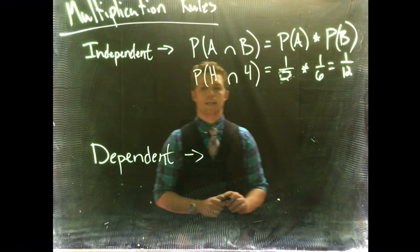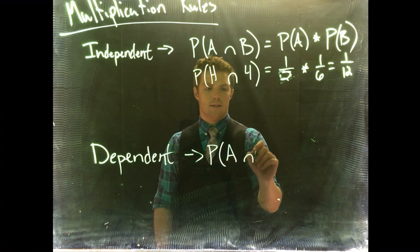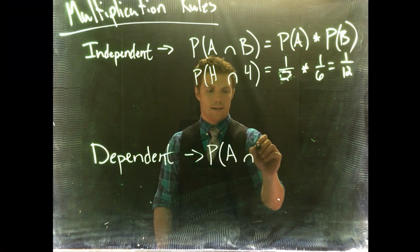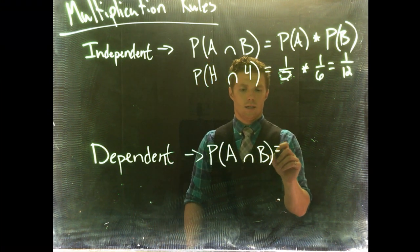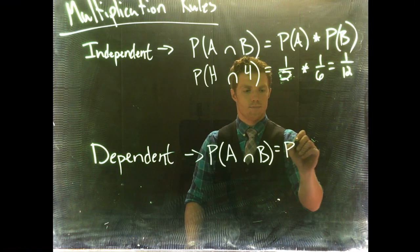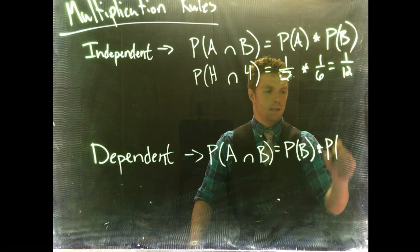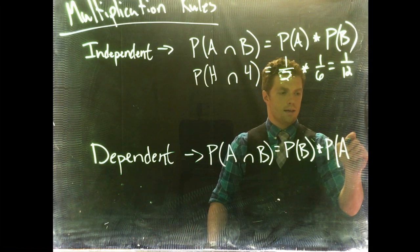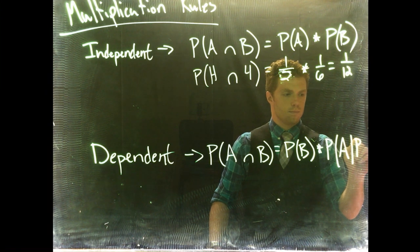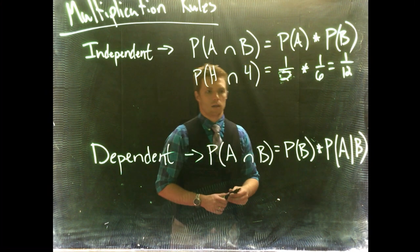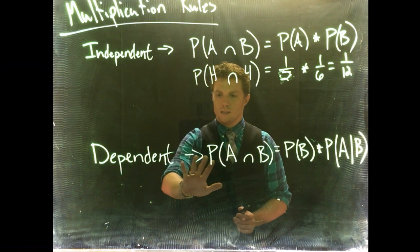Now if events are dependent, it's a little bit different. The probability of A intersect B is equal to the probability of B multiplied by the probability of A given B. So those are the independent events formula and the dependent events formula.